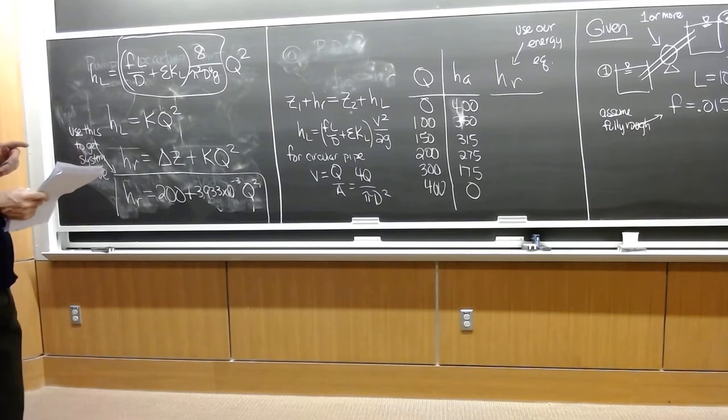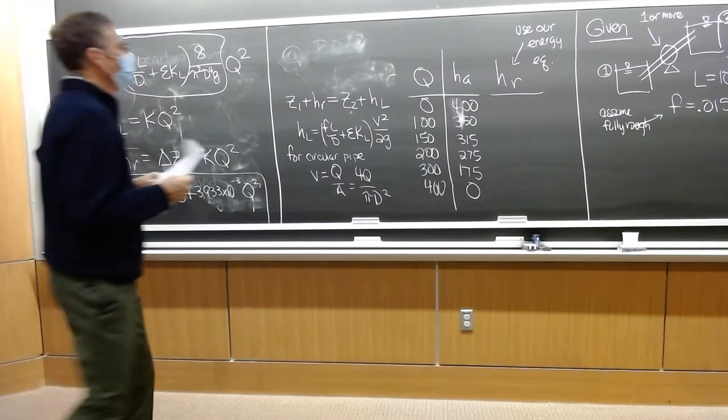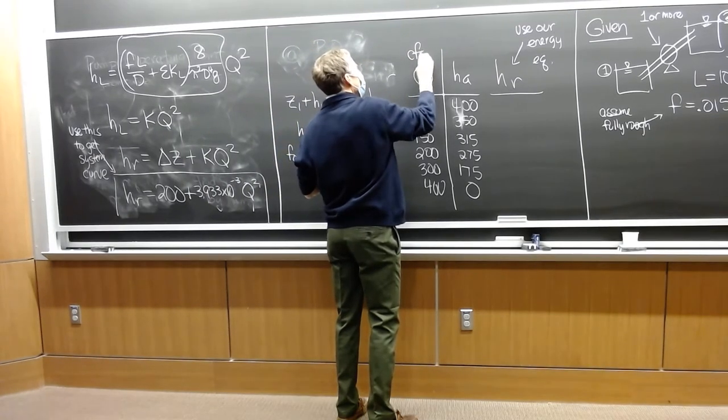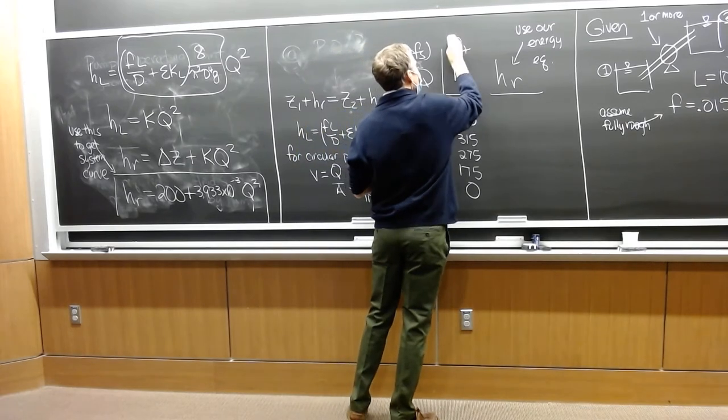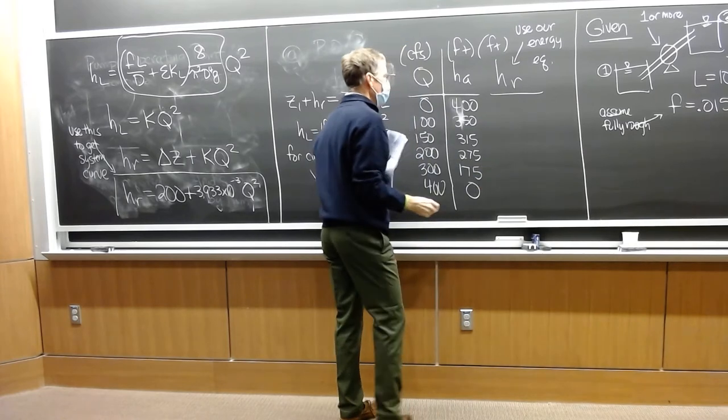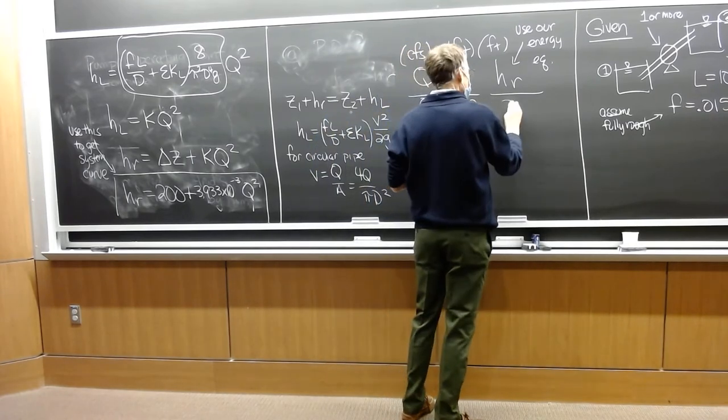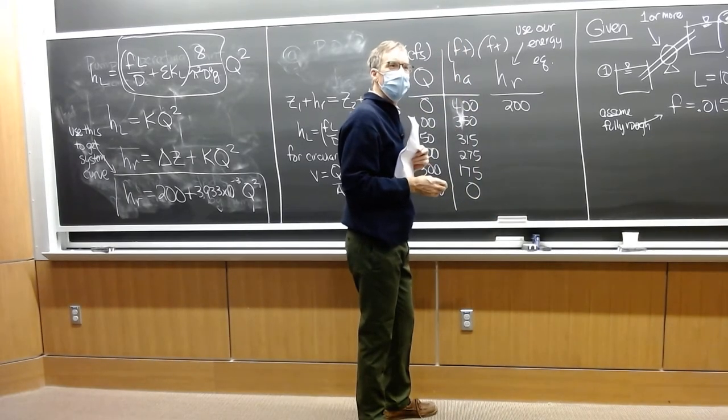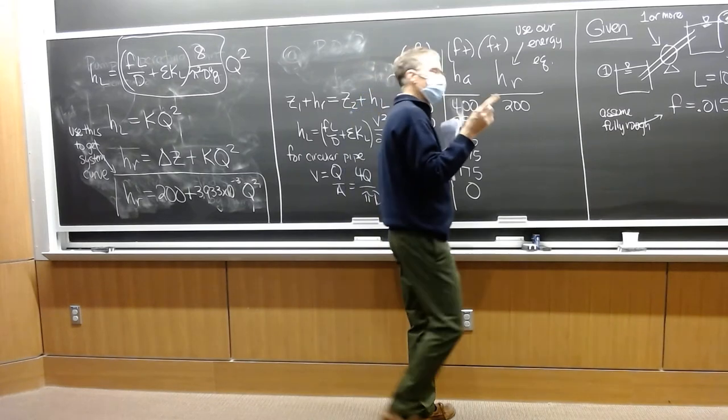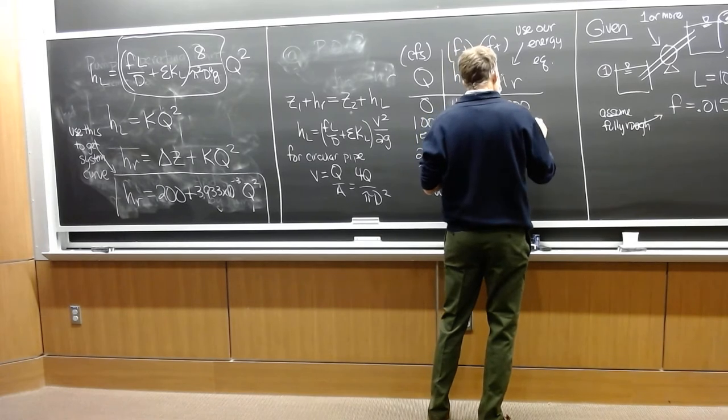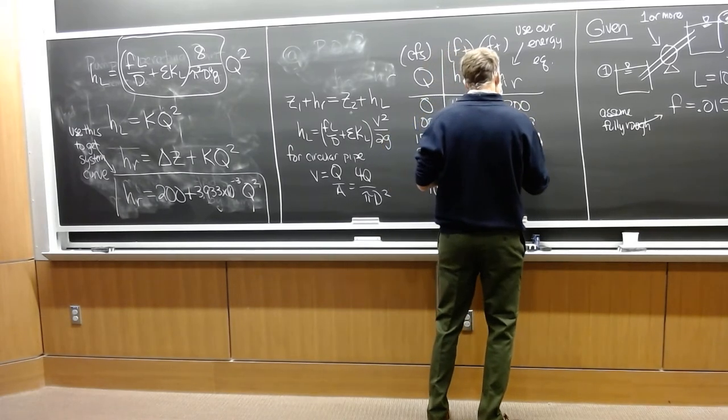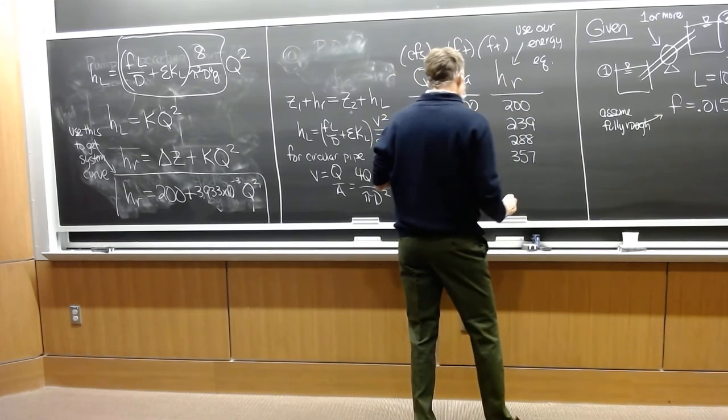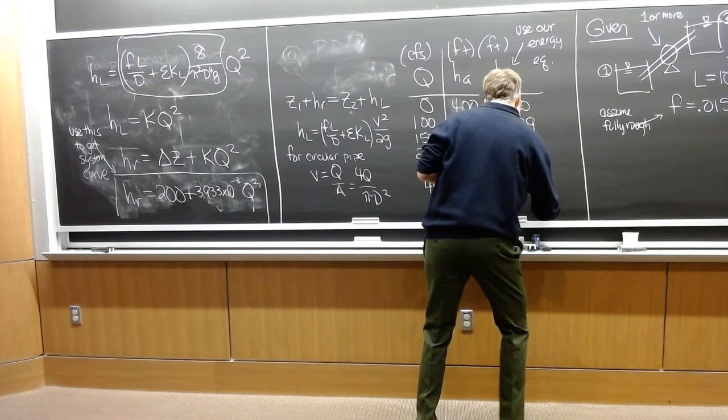And I calculated the head required at the various Q's. That's 200 feet at zero flow, then it goes upward from there: 239, 288, 357, 554, 829. It has the look that we expect it to have is that it starts at a non-zero value. And then as we add flow, we're adding more head required.